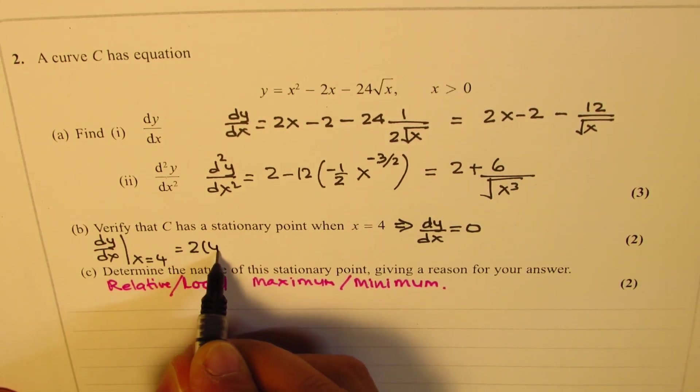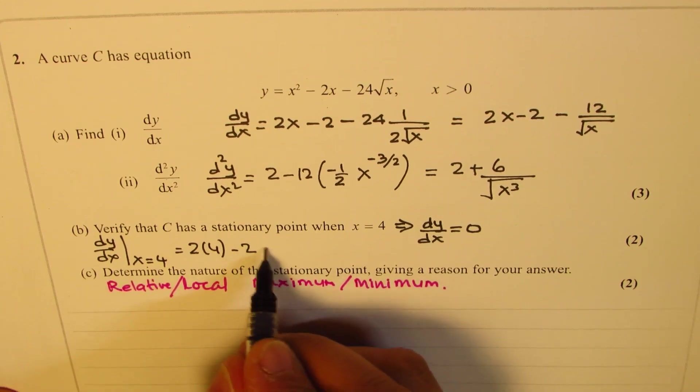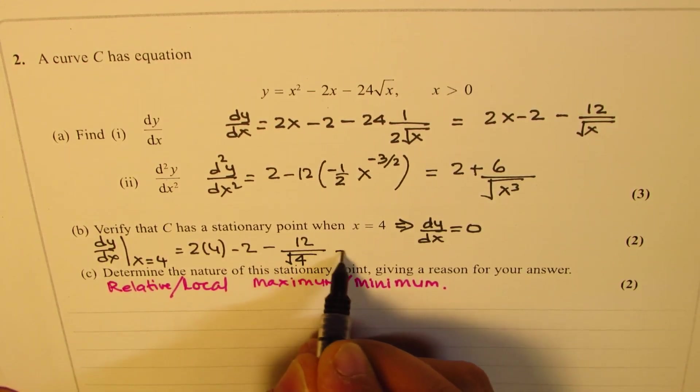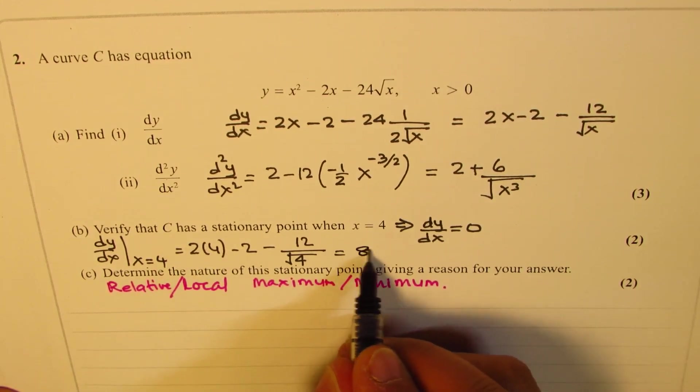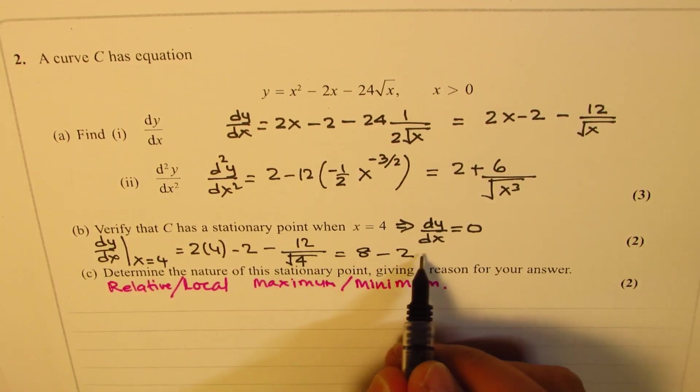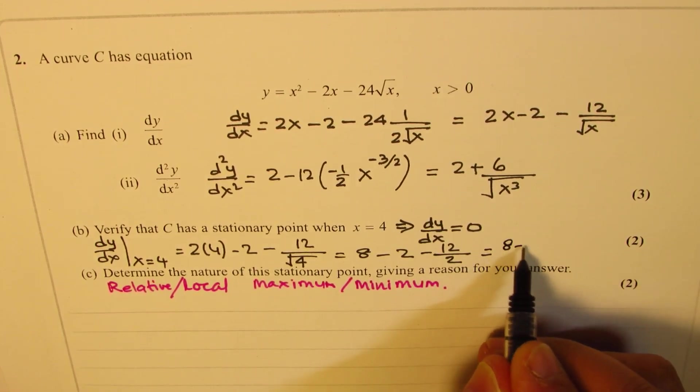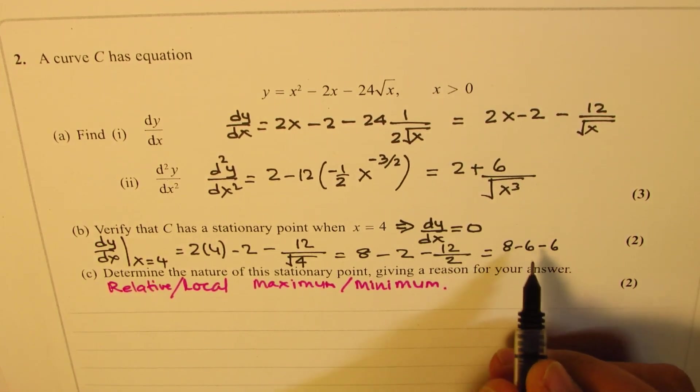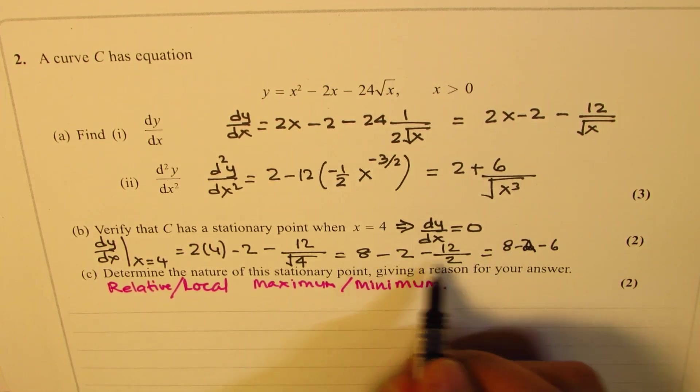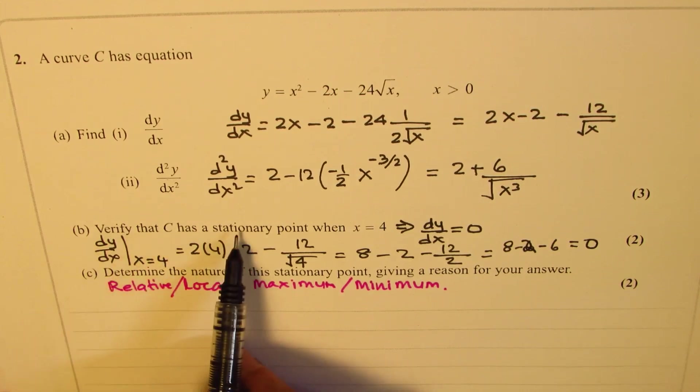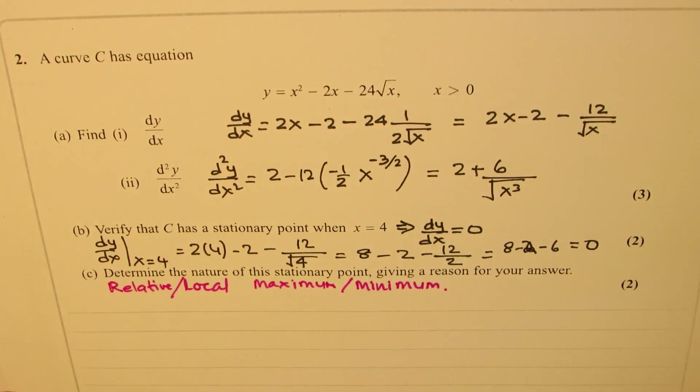So we get 2 times 4 minus 2 minus 12 over square root of 4. So that gives you 8 minus 2 minus 12 over 2. Square root of 4 is 2. So that is 8 minus 2 minus 6, which is indeed 0. And therefore, yes, it is a stationary point.